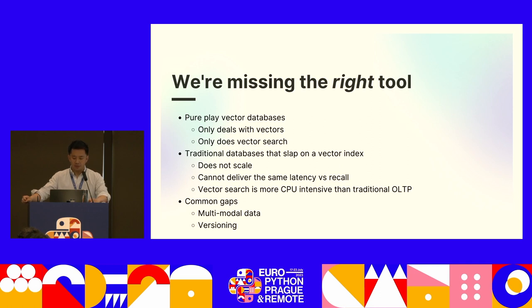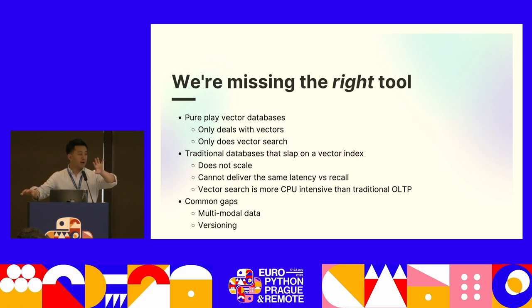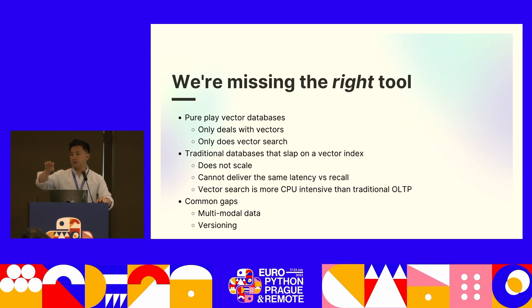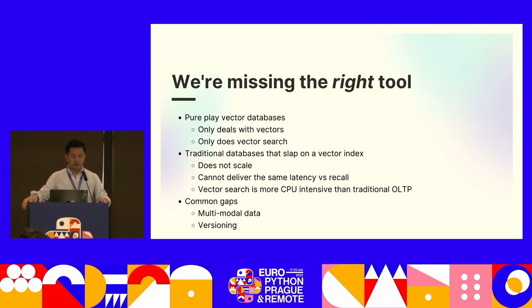If you look at the space, it divides into two. You've got pure-play vector databases on the one hand — your Pinecones, Weviates, Qdrants, Chromas. And on the other hand, you've got traditional databases like Postgres, MongoDB, Elasticsearch and all that, which are adding on vector indexes.